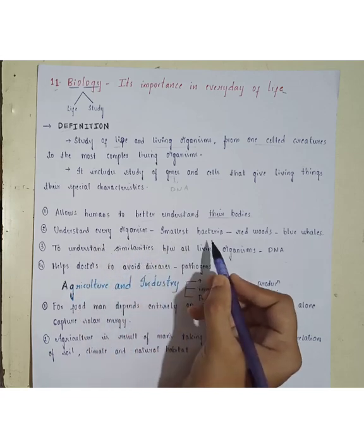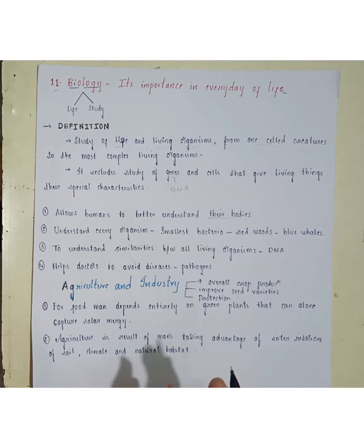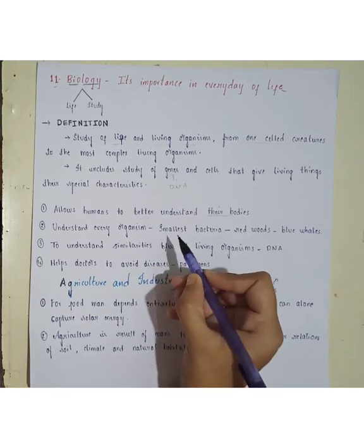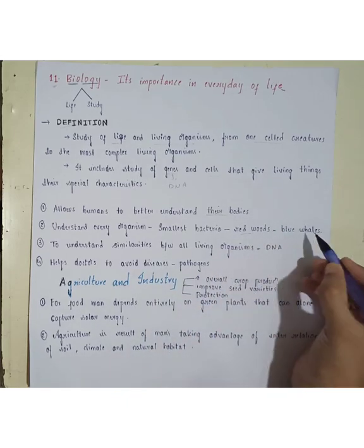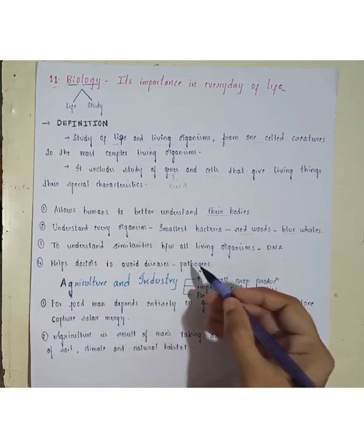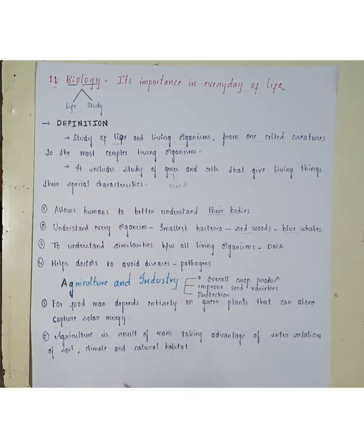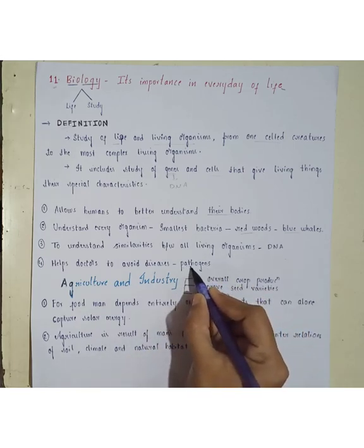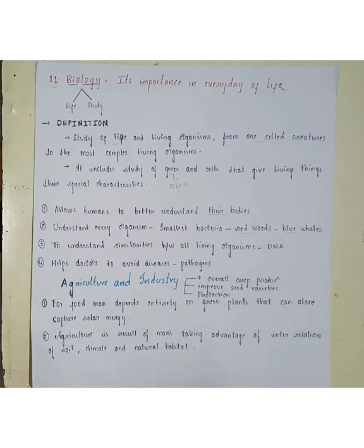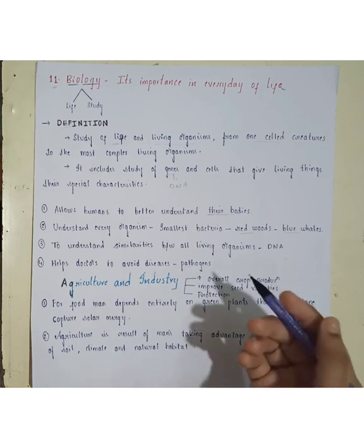Biology helps us understand every organism, from the smallest bacteria to redwoods and blue whales. It covers entire organisms — not only bacteria and humans, but also plants and marine organisms. It also helps us understand the similarities between all living organisms — for example, DNA. If any changes occur in human beings, they can be replaced with the same organism that has the same genetic information. It also helps doctors avoid diseases by knowing about pathogens, which are organisms that cause diseases to humans, and by controlling certain pathogens.